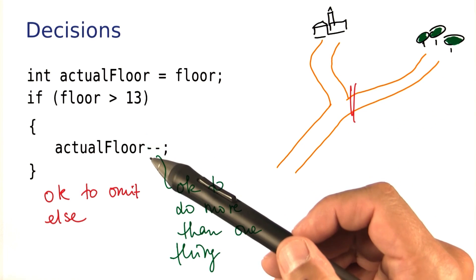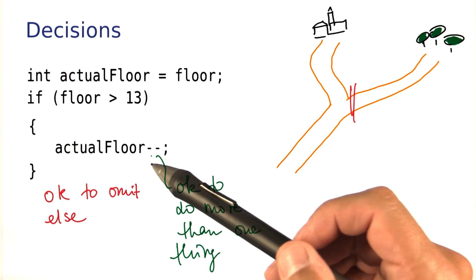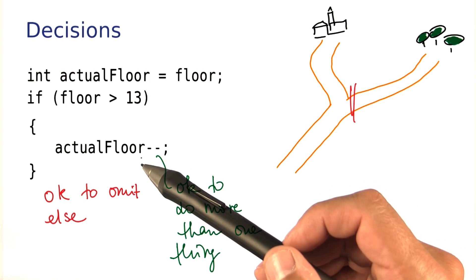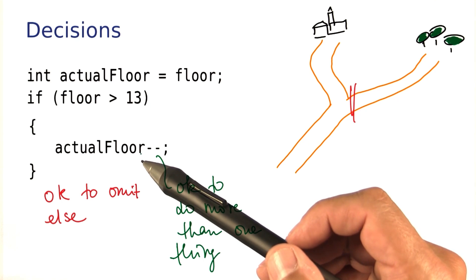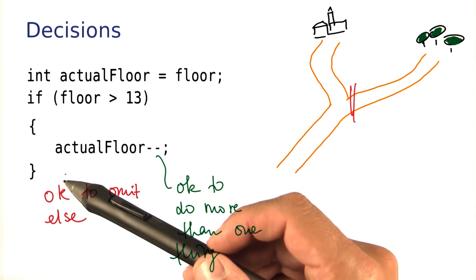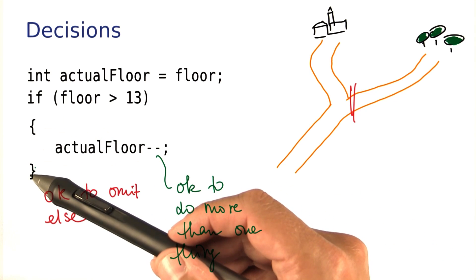It's okay to do more than one thing. You could put other actions inside here, maybe a print statement. Generally, in more complicated situations, there's going to be several statements in between the braces.